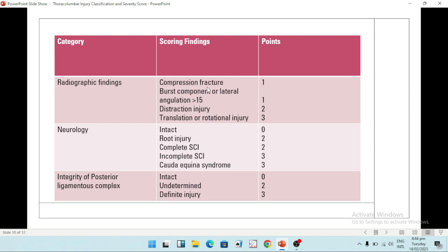So points are given according to the type of fracture you see on the x-ray. Next comes the neurology. If it is intact, there are zero points. The root injury and complete spinal cord injury have two points each, whereas incomplete and cauda equina have three points each. We're going to discuss these in separate videos. Lastly comes the integrity of the spine, of the posterior ligamentous complex. It may be intact, or maybe you're suspecting it but don't know for sure, or there is definite injury.